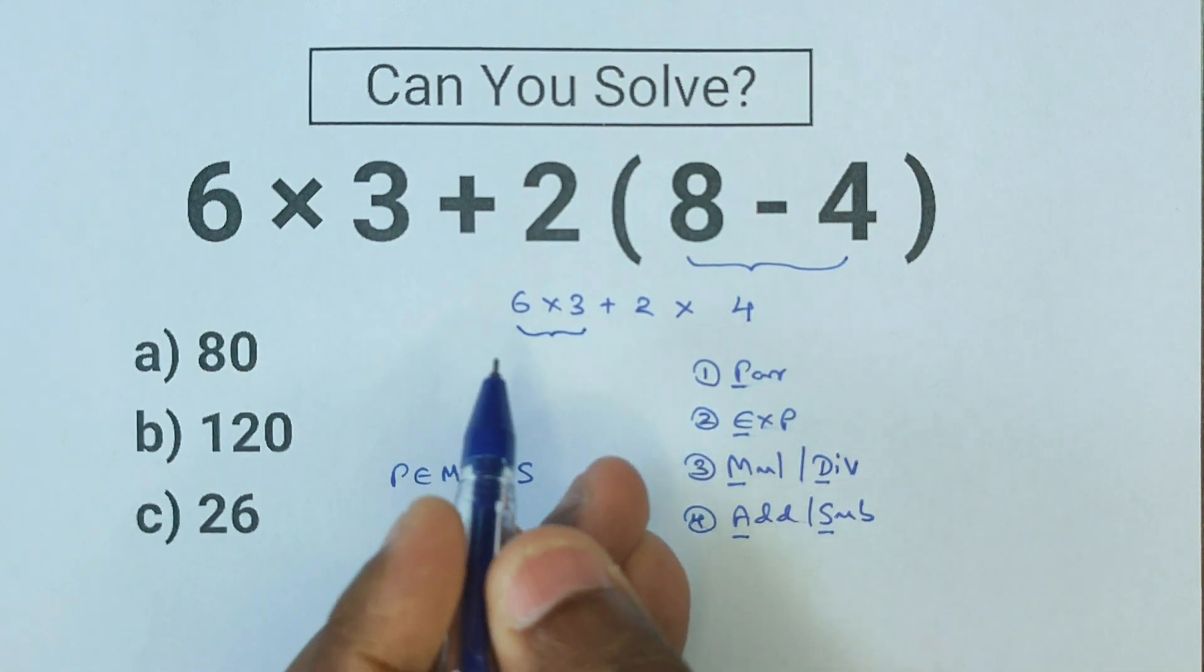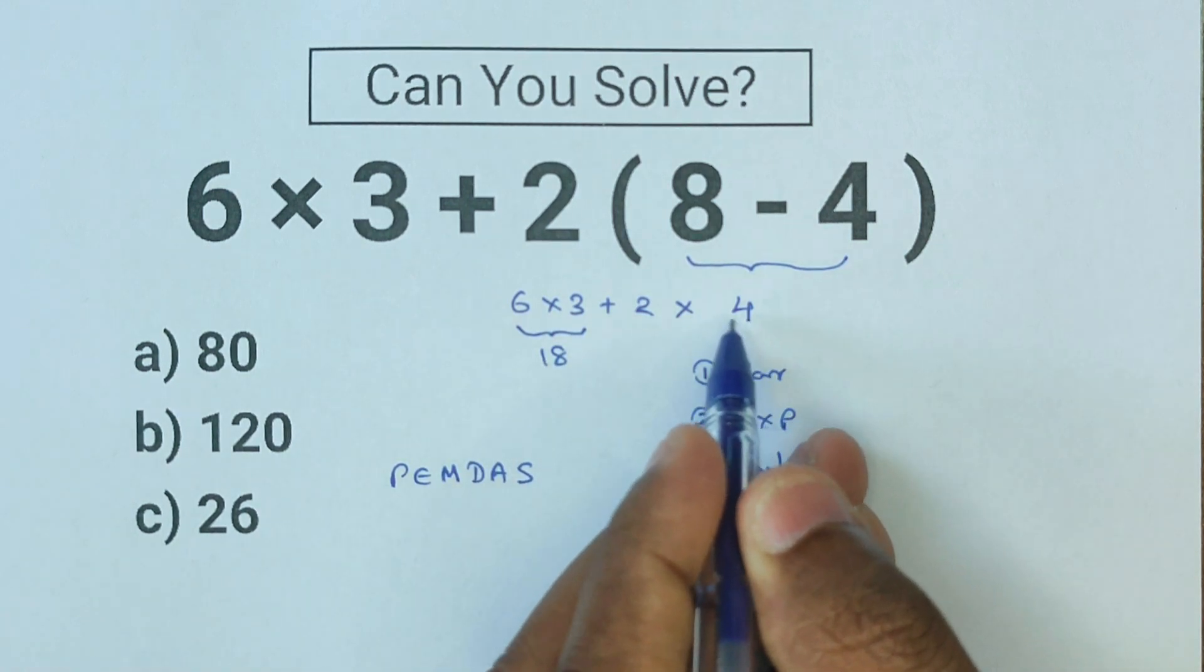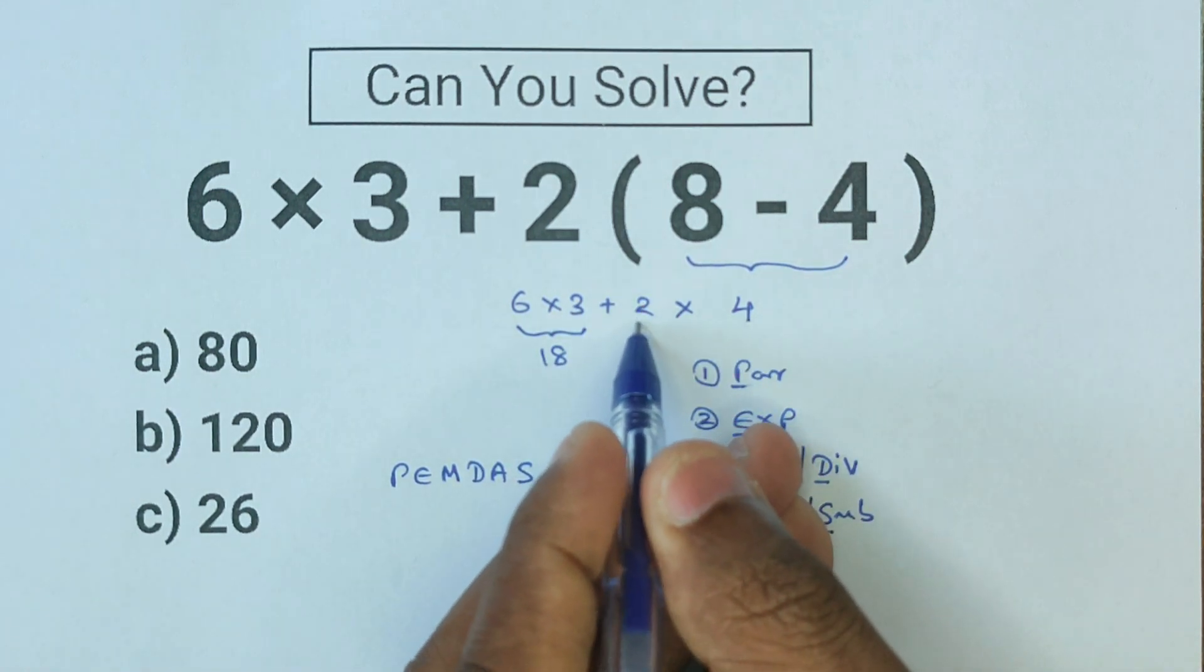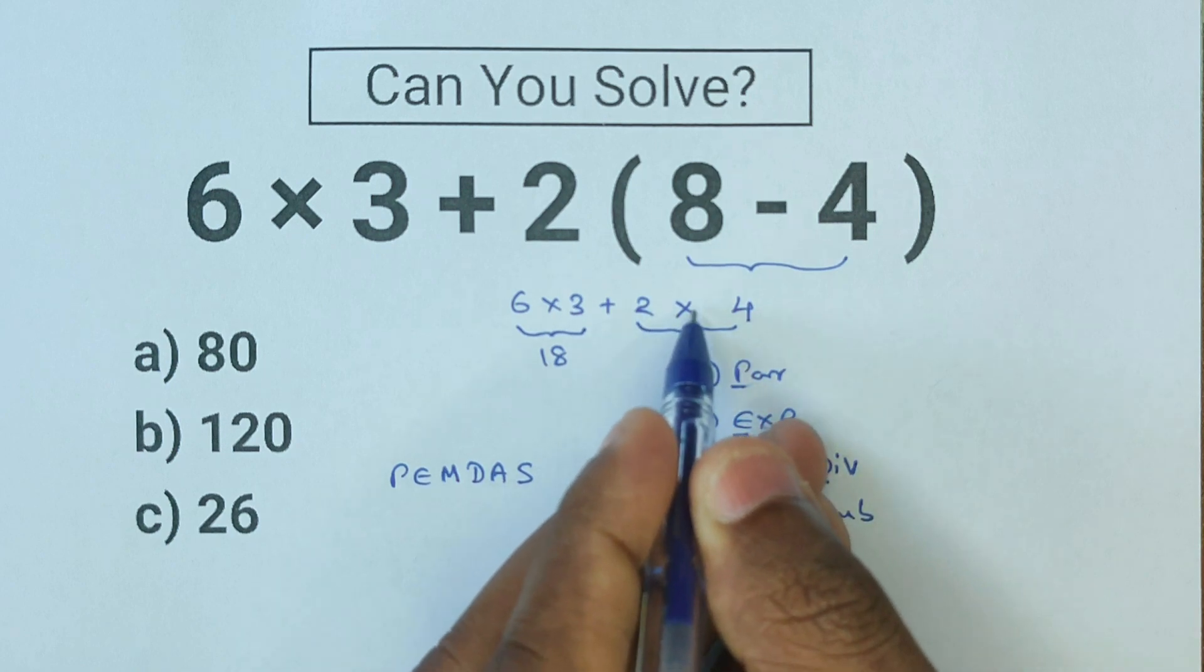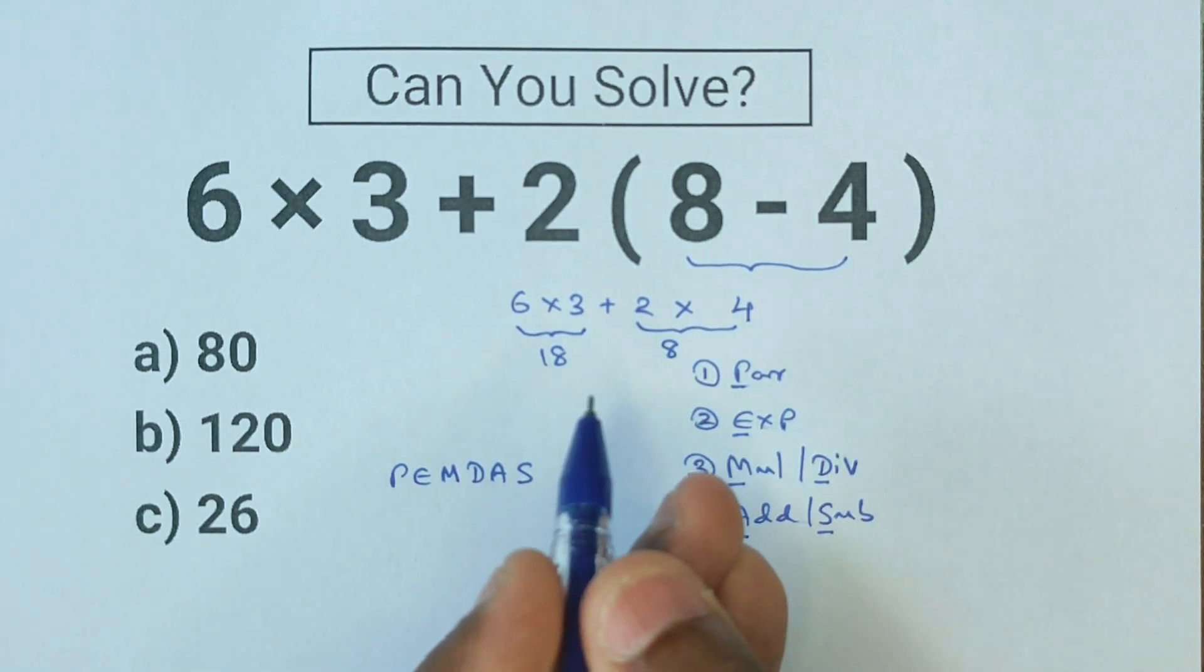Also, you can see there is another multiplication here, so we have to do this as well. Here we have 2 × 4, and 2 × 4 equals 8. The rest of the expression stays the same.